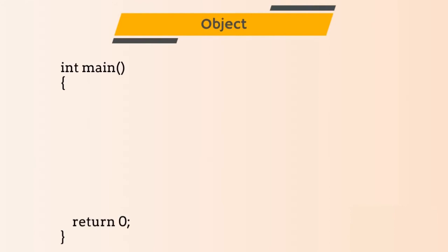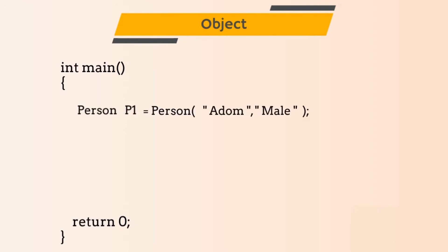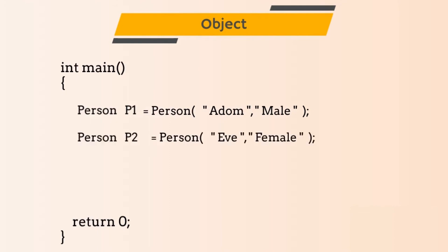Now let's create an object of class Person in the main function. The syntax for creating an object is the same as creating a variable. First we define the type — since this object belongs to class Person, its type will be Person — and give it a name, p1. So our syntax becomes: Person p1 = Person(name, gender). For now we will pass name as Adam and gender as male. Similarly we create a second object p2, passing Eve as the name and female as the gender.